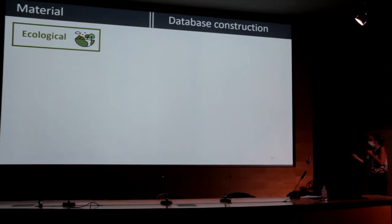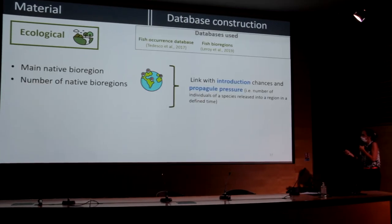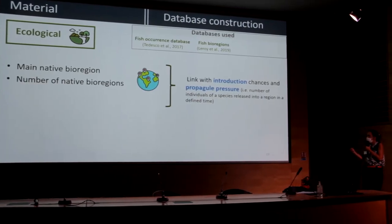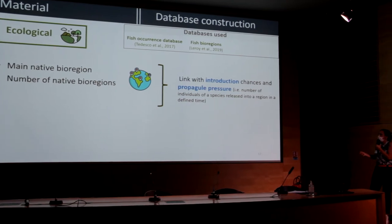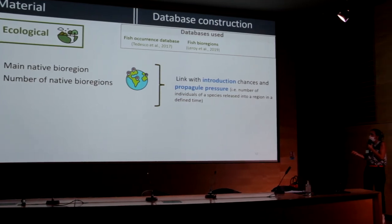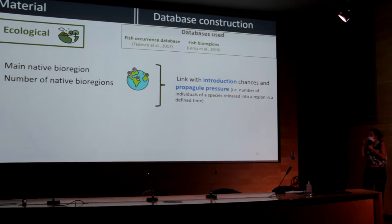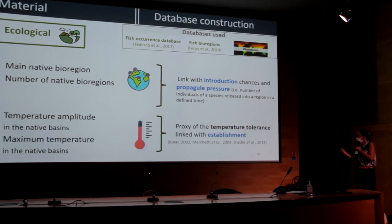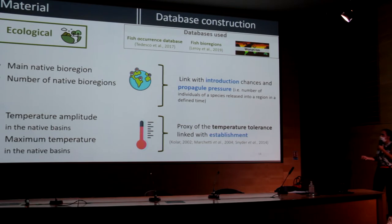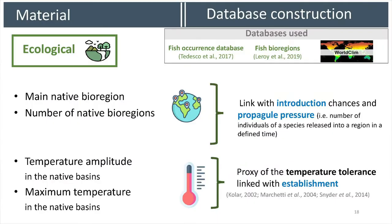Concerning ecological characteristics, we collected the main native bioregions and the number of native bioregions, hypothesizing that these two characteristics are linked with introduction chances and propagule pressure, as some regions are more prone to import and export fish species. We also collected the temperature amplitude and the maximum temperature in native basins as a proxy of temperature tolerance, which has already been linked with establishment success in the literature.